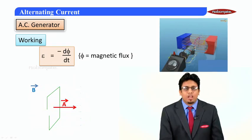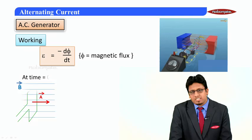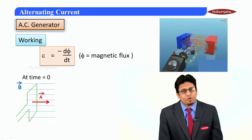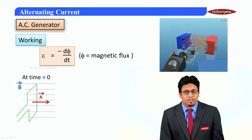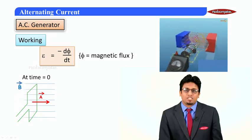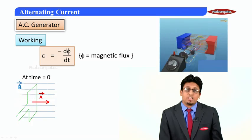Let's discuss this phenomenon in detail. Let's say that at t = 0, the area vector is anti-parallel to the magnetic field. Therefore, the flux in this particular case is negative.